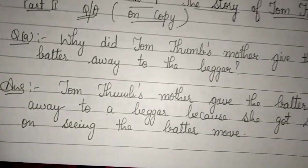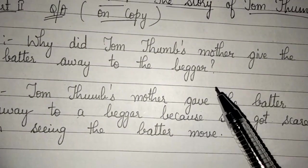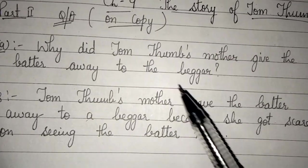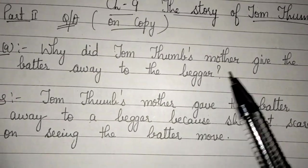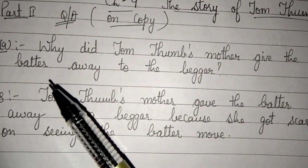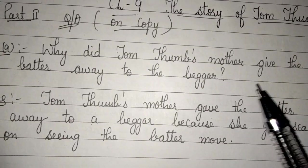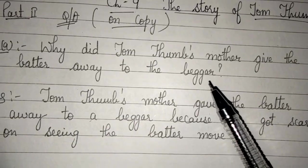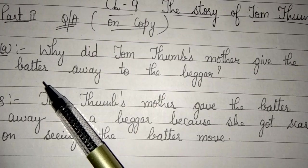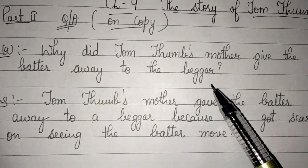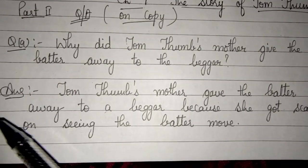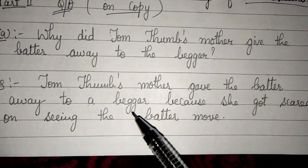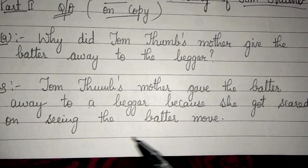So let's start with question number 1: Why did Tom Thumb's mother give the batter away to the beggar? Tom Thumb's mother gave the batter away to a beggar because she got scared on seeing the batter move.